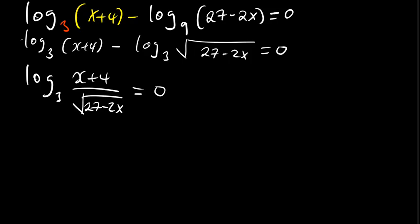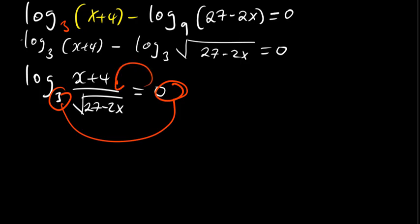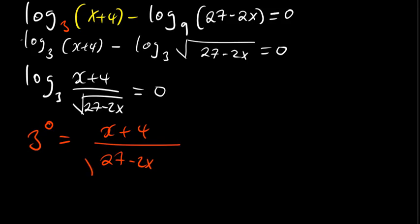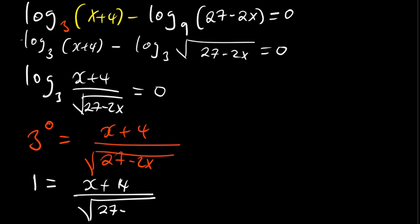When I reach this point I can apply another property: converting from log to exponential form. The base raised to the power of what is outside equals everything inside. So that becomes 3 raised to the power 0 equals (x + 4) divided by √(27 − 2x). Any number to the power 0 becomes 1, so 1 equals (x + 4) divided by √(27 − 2x).